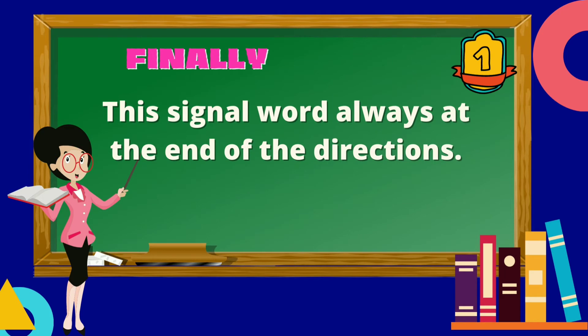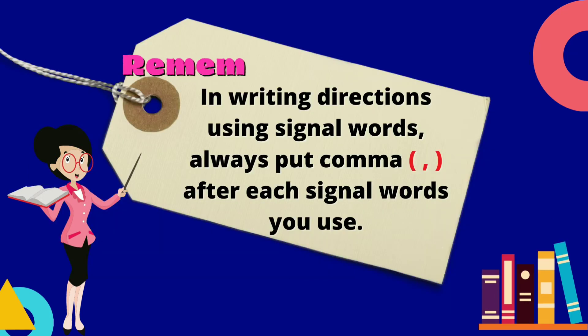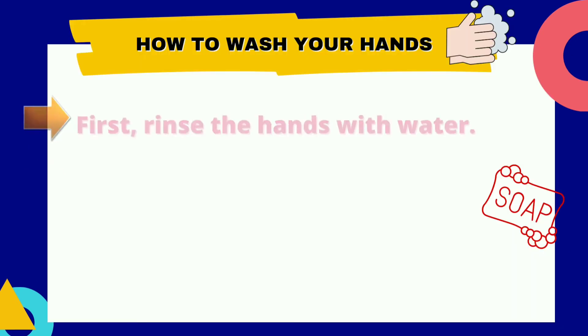Finally and lastly — these signal words always come at the end of the directions. Remember, in writing directions using signal words, always put a comma after each signal word you use.